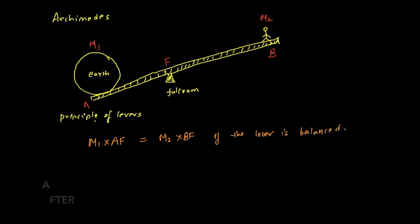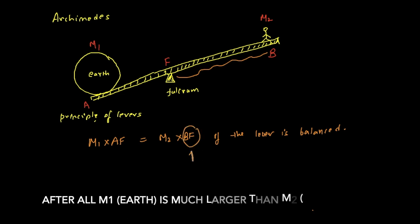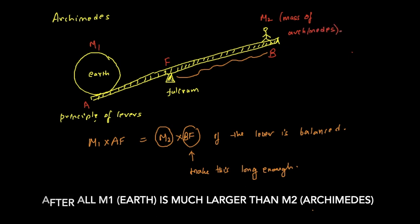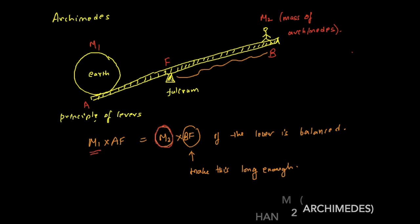Now if we make BF sufficiently long, if we make this long enough, then it would compensate for the smallness of the mass of Archimedes. So Archimedes is just one man, so M2 is the mass of Archimedes.